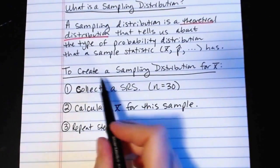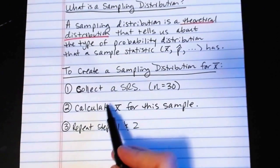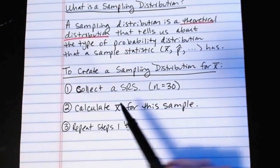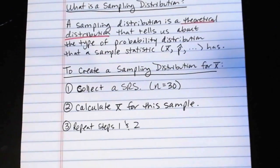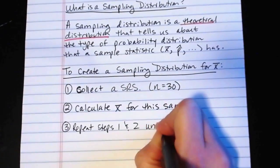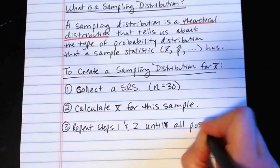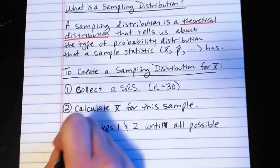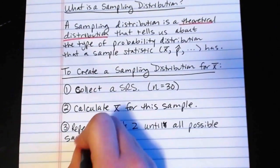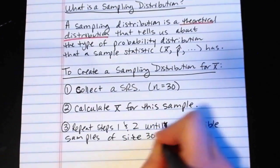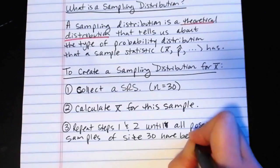So basically, I would draw a new sample, calculate x bar for that sample. Draw another sample, calculate x bar for that sample. Repeat steps one and two until all possible samples of size 30 have been generated.